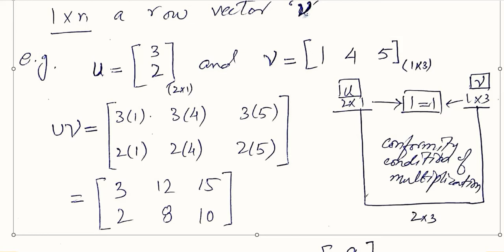We check if the internal terms are equal to each other — the inner dimensions. Since 2 and 3 are on the outside, we check the inner terms. Because these are equal, we can multiply the two matrices; otherwise we cannot. Since they are equal, the conformity condition of multiplication is fulfilled. The two remaining outer terms, 2 and 3, define the order of the resultant matrix, which will have two rows and three columns.